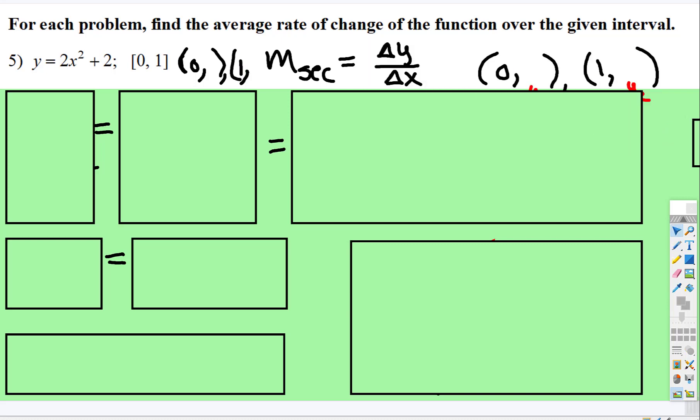Alright, so let's go ahead and do that here. So we're going to find the average rate of change, which means m secant, which is the change in y's over the change in x's, but we have to find the y's.